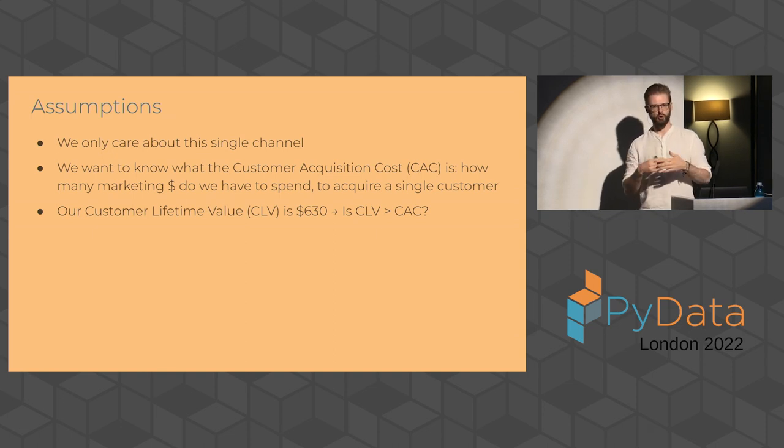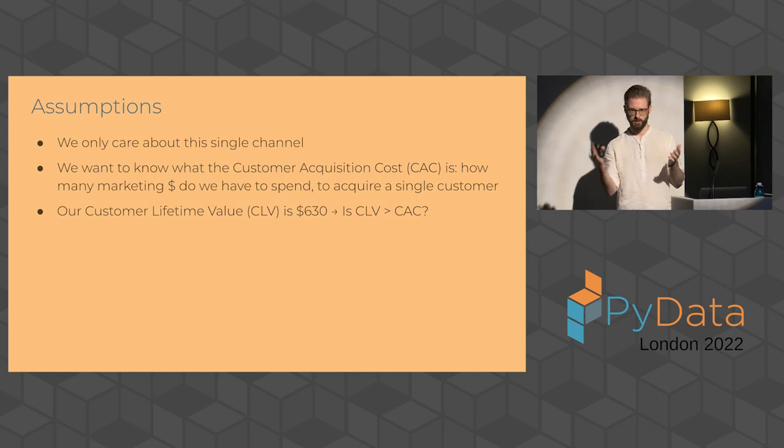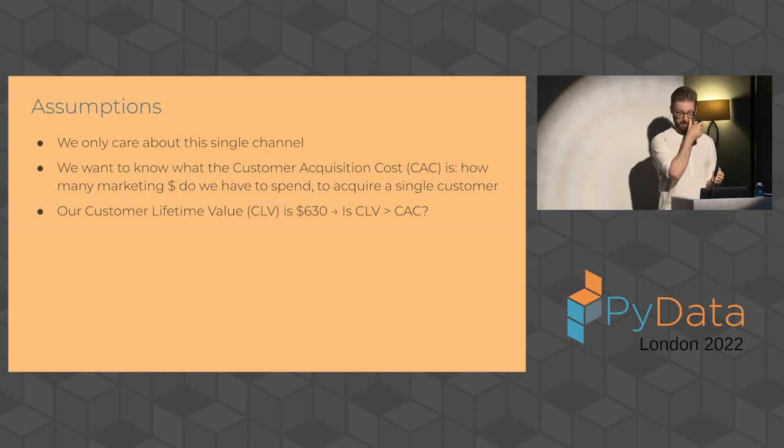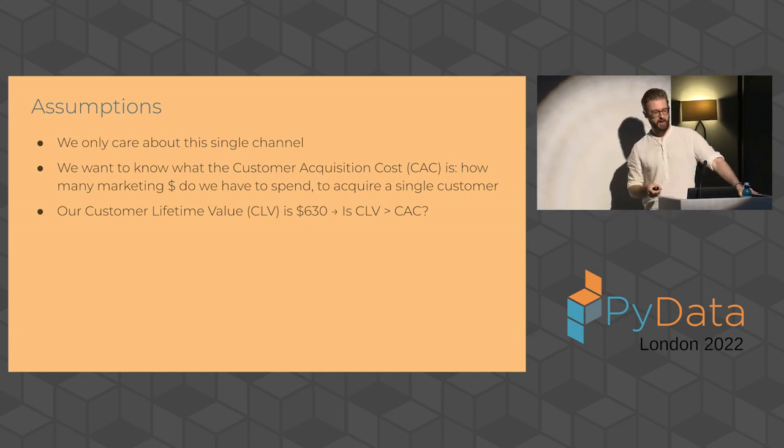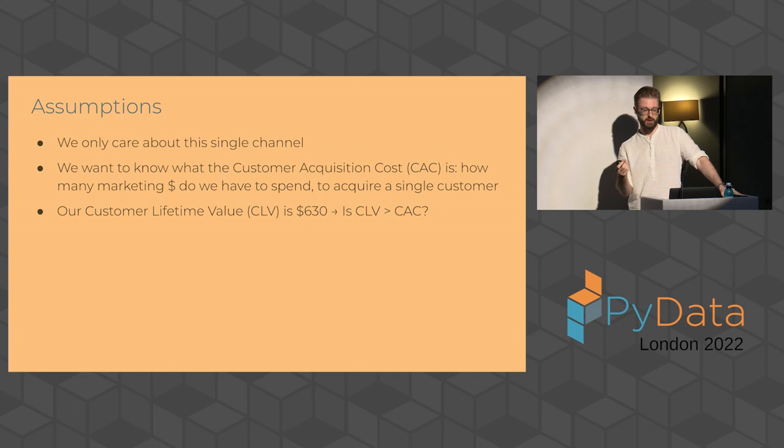Here we're going to start very simple and going to care about just assume that we just have a single channel here. So let's say it's all just Google ads. Usually you would have Facebook ads and everything, but here it's just we're spending marketing dollars on this one thing, and we're getting new users. And the central thing that we're interested in is our customer acquisition cost, the CAC, and I'm going to be using this a lot. So remember what the CAC is, it is how many marketing dollars do you have to spend to get one new customer. So that's in general what we care about.